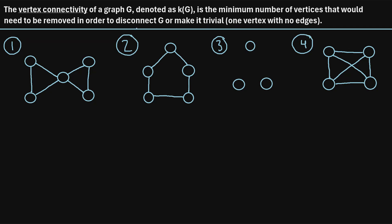I have four examples of graphs right here. Let's take a look at each one and determine the vertex connectivity of each graph. Let's consider graph number one. Right now, this is a connected graph, which means we can get from any vertex in the graph to any other vertex just by traveling along a sequence of edges. So how many vertices would we need to remove from this graph to make it disconnected?